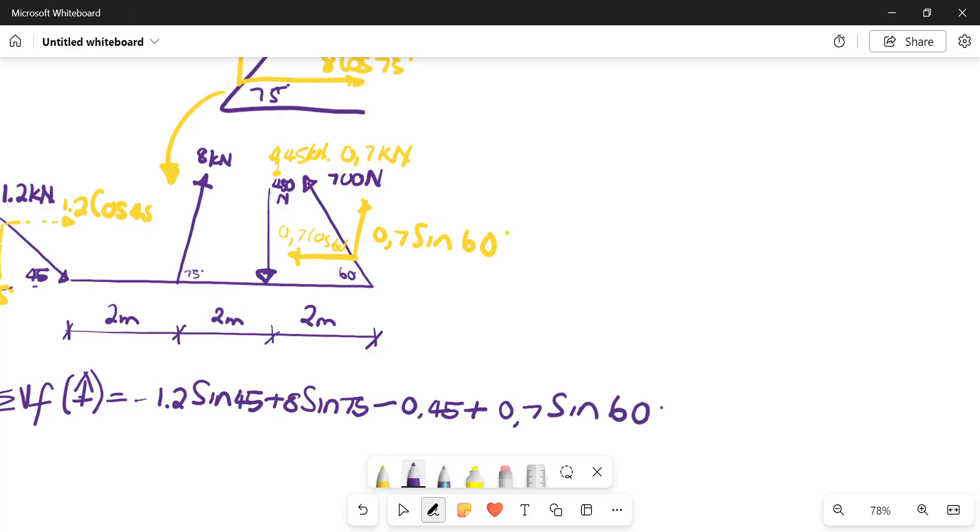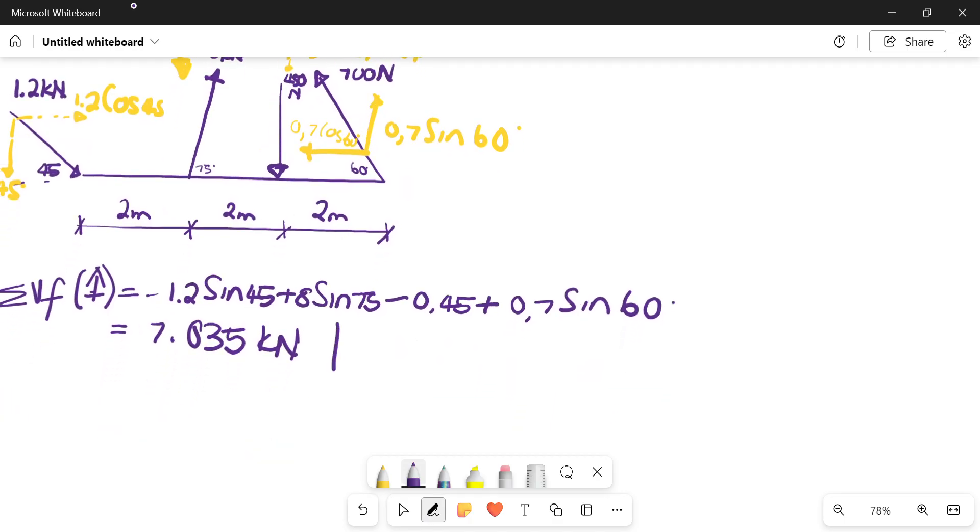Then plus 0.7 sine of 60. You can plug all of that into the calculator: negative 1.2 sin 45 plus 8 sin 75 minus 0.45 plus 0.7 sin 60. I get 7.035 kilonewtons, and my answer is positive, so it says we have one going up.